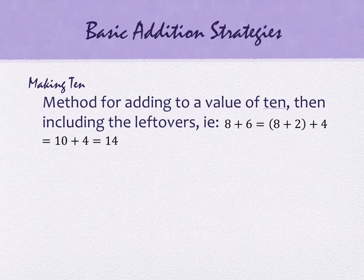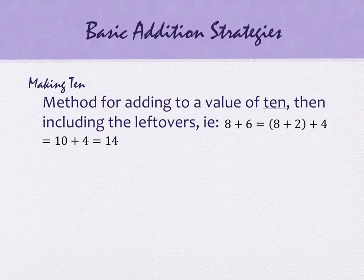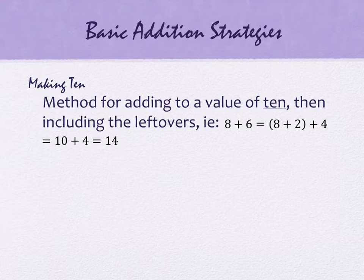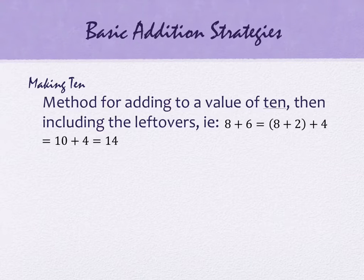The last basic strategy is called making 10. If you have 8 plus 6, you can break the 6 into 2 plus 4. Why? Because 8 plus 2 is 10. Once you have your 10, you add the remaining 4, giving you 14. You're picking out numbers that nicely add to 10, which is a very friendly number to work with.